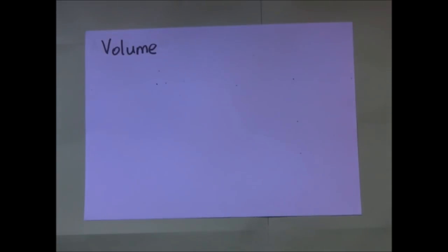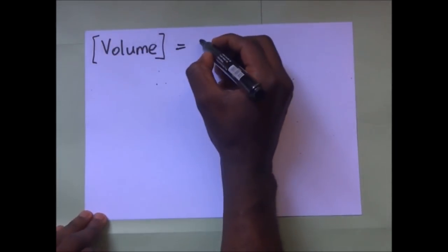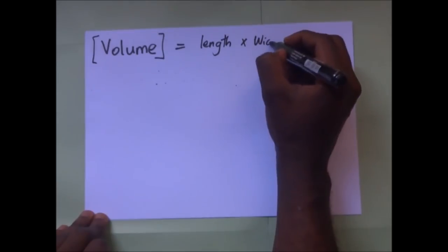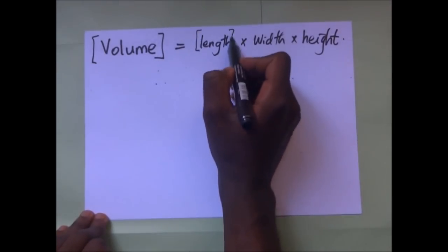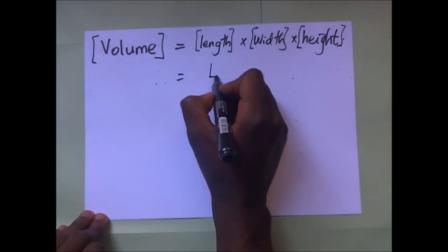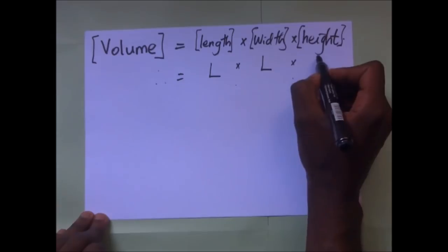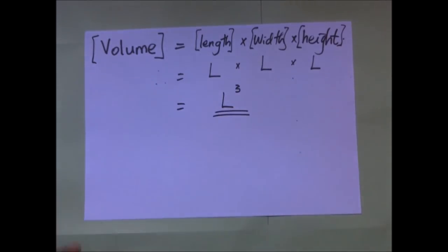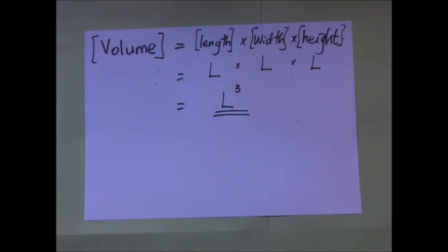The dimensions of volume: volume equals length times width times height. Length is L, width is also a length L, and height is also a length L. Therefore the dimensions of volume are L cubed. That is how volume relates to the three fundamental quantities of length, mass, and time.